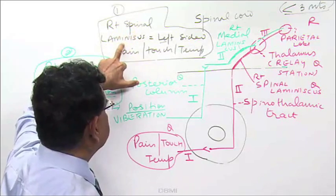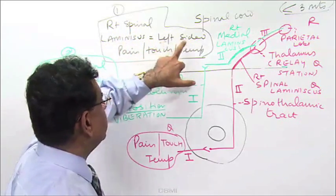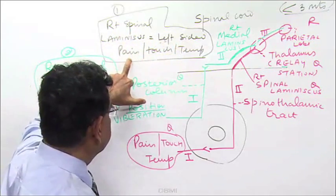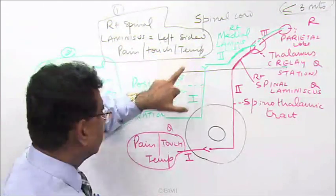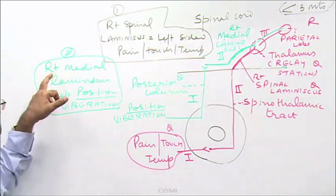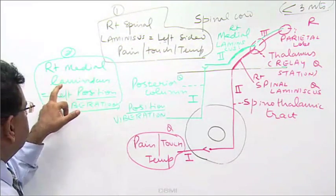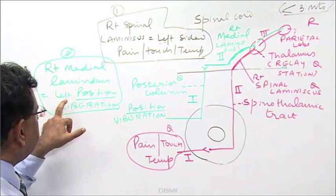Right spinal lemniscus contains which fiber? Left-sided. Similarly, right medial lemniscus contains which fiber? Left-sided. Perfect.